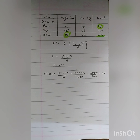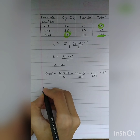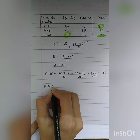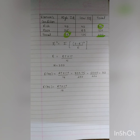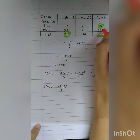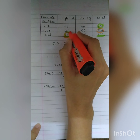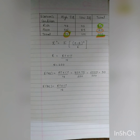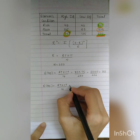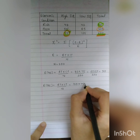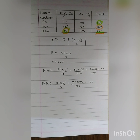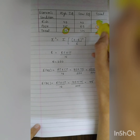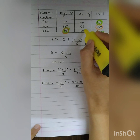The expected frequency for the observed value 35 (poor, high IQ) is: row total 120 times column total 75 divided by 200, which equals 45. The expected frequency for the observed value 40 (rich, low IQ) is: row total 80 times column total 125 divided by 200, which equals 50.